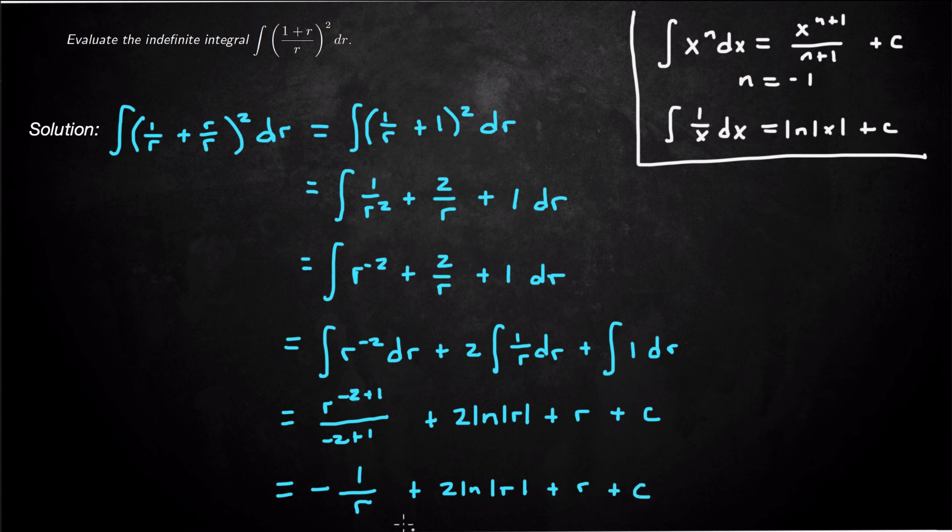And that is the value of our integral. Or I shouldn't say value, that's the function, the anti-derivative family for this indefinite integral. So negative 1 over r plus 2 natural log r plus r plus c.